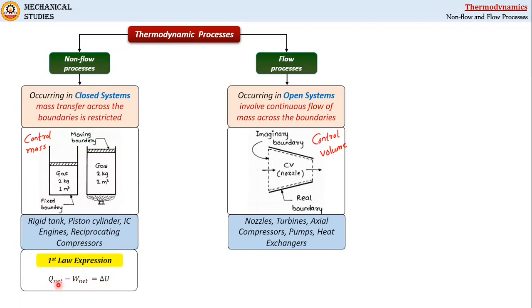Q minus W is equal to delta U. Remember here, Q net, W net and that is equal to delta U. So this is the correct form of first law that you should use for non-flow process.